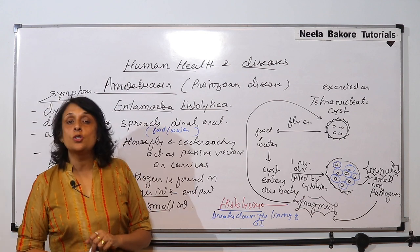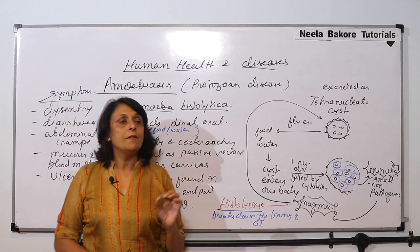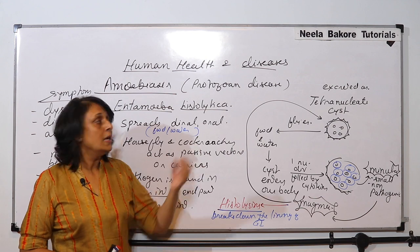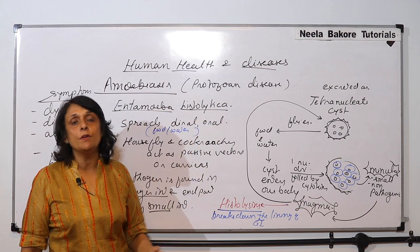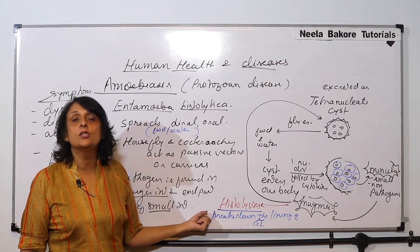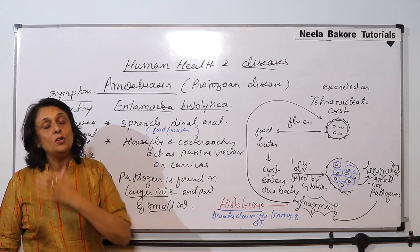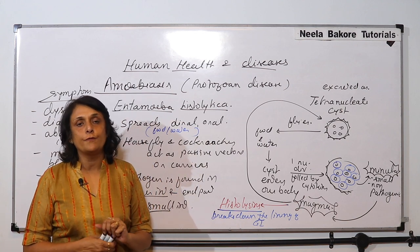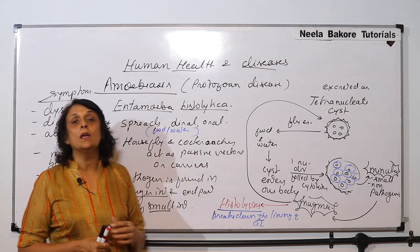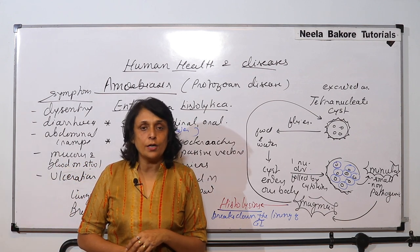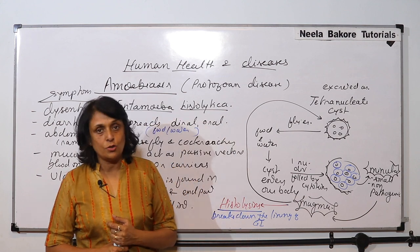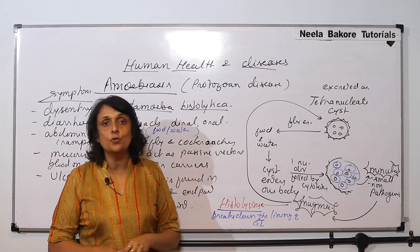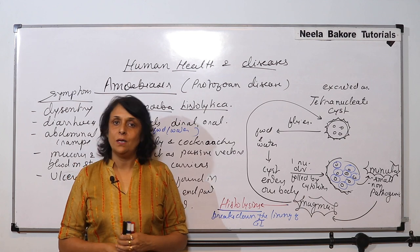This is Entamoeba histolytica — 'Entamoeba' belongs to the protozoan group like amoeba, and 'histolytica' refers to the histolysins it secretes. Treatment is by using antibiotics. But prophylaxis is very important — we need to take care of contamination. We should be eating clean food and drinking clean water not contaminated with sewage. Proper sanitization and not eating exposed food are the prophylactic measures to keep in mind.